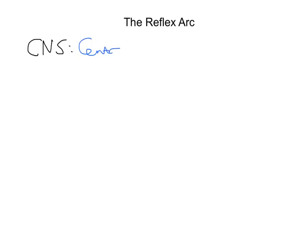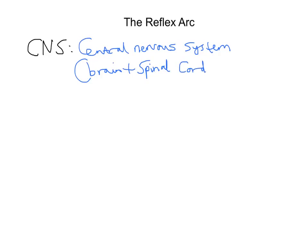Before we talk about the reflex, we need to first address what the CNS is. The CNS stands for the central nervous system, and that consists of the brain and the spinal cord. We also have what's called the peripheral nervous system, and that's all the nerves that come off and branch from that spinal cord.